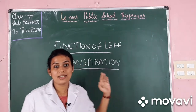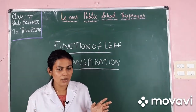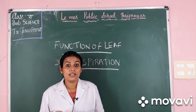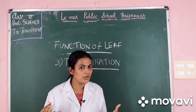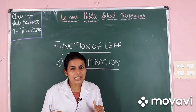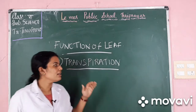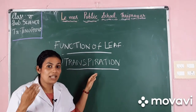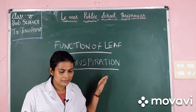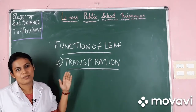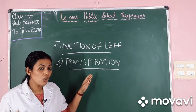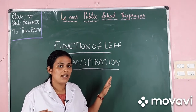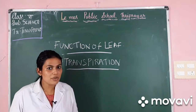Now we will learn the third function of leaf — transpiration. Plants absorb plenty of water from the soil, but they need only a little amount of water. The rest of the water is released out to the atmosphere as vapour. This process of loss of water is called transpiration, and it occurs through stomata — the tiny openings present in the lower region of the leaves.